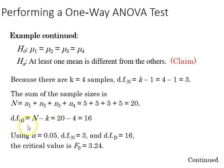The degrees of freedom in the denominator will be N minus K, 20 minus 4, which gives us 16. Using the 0.05 alpha level with those degrees of freedom, our critical value of F from our table will be 3.24.